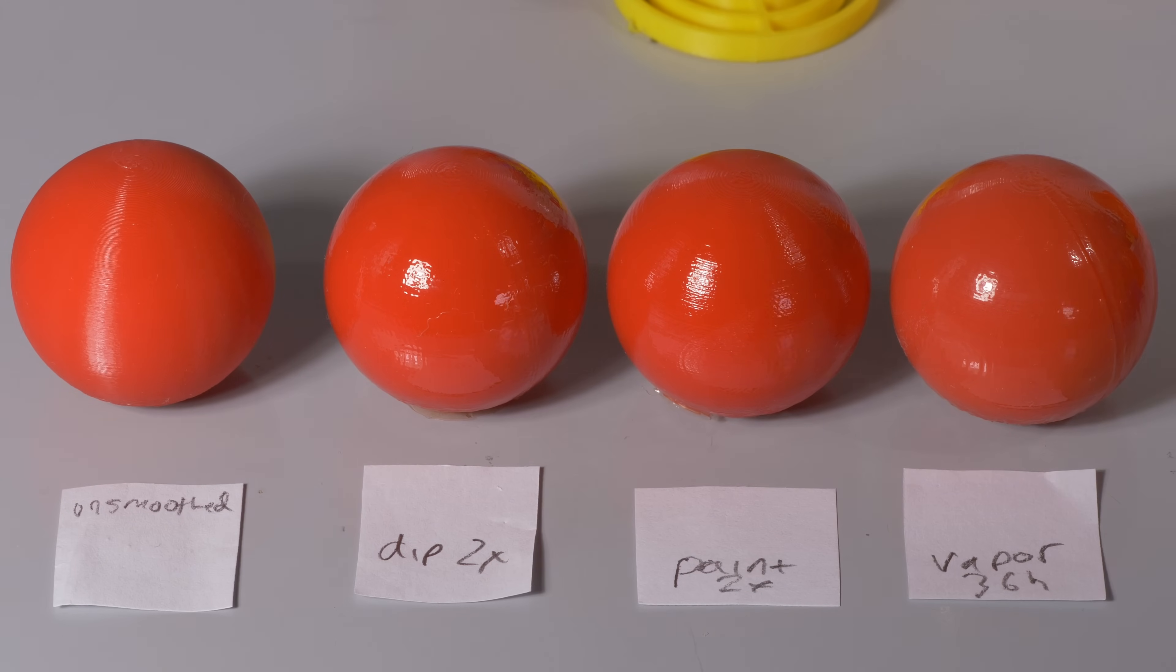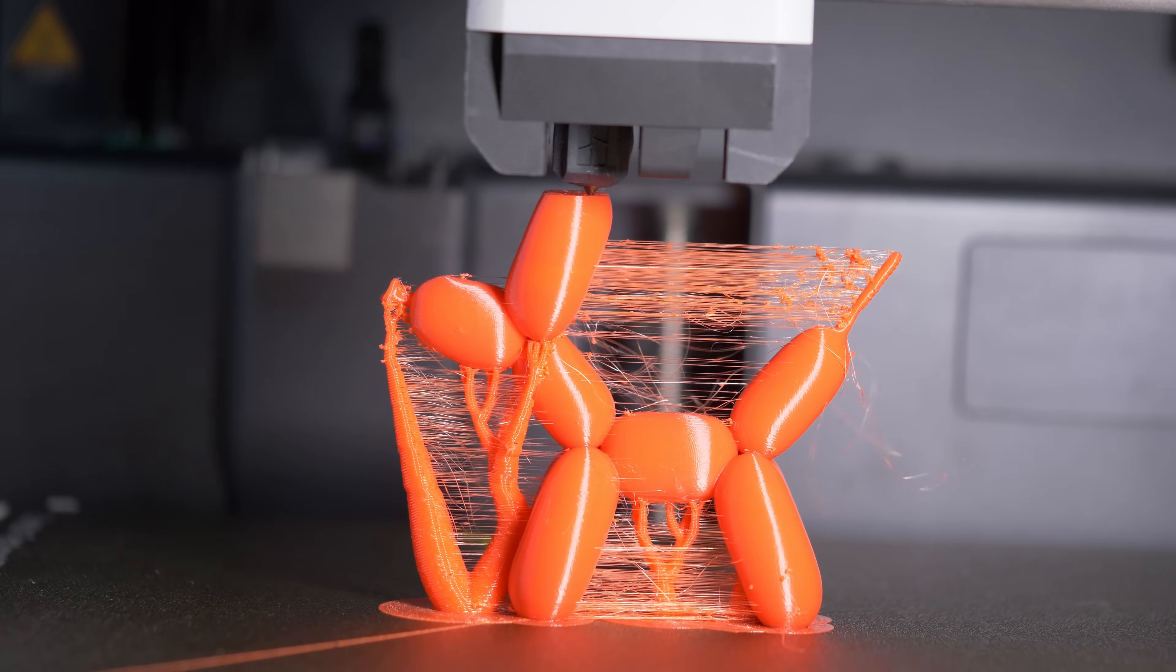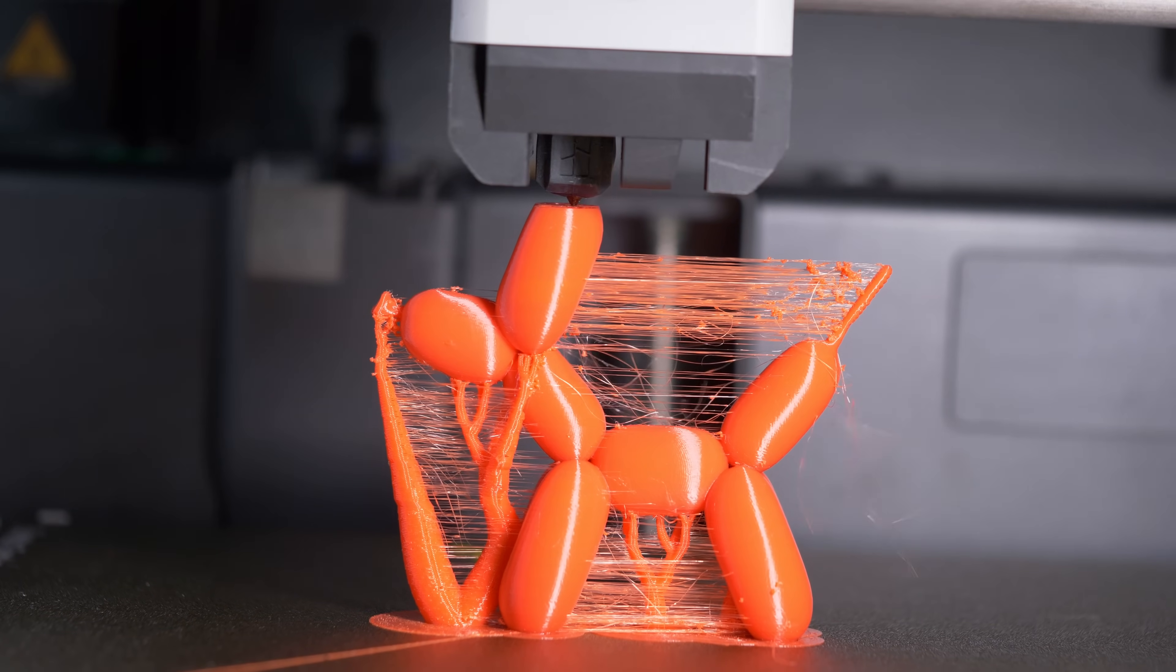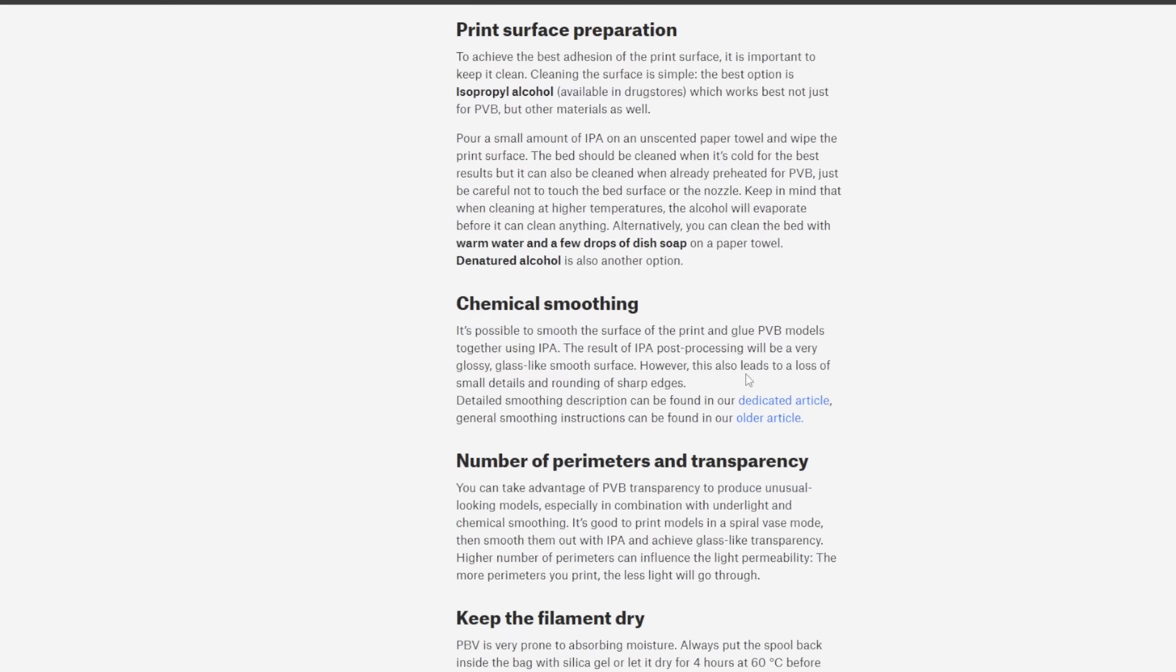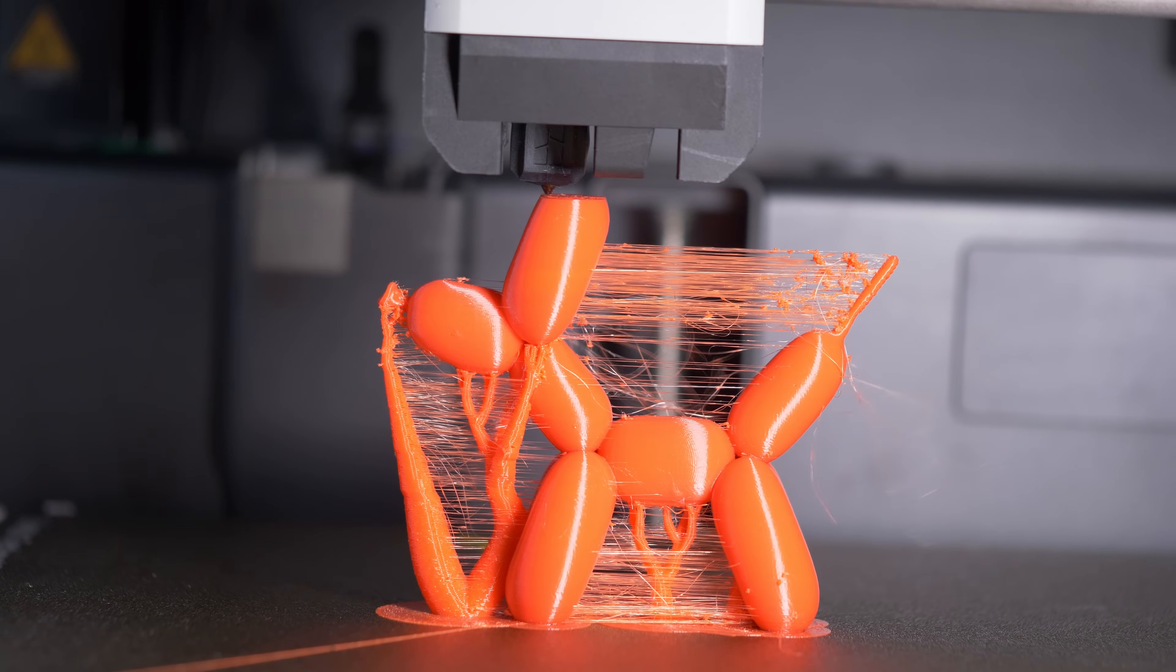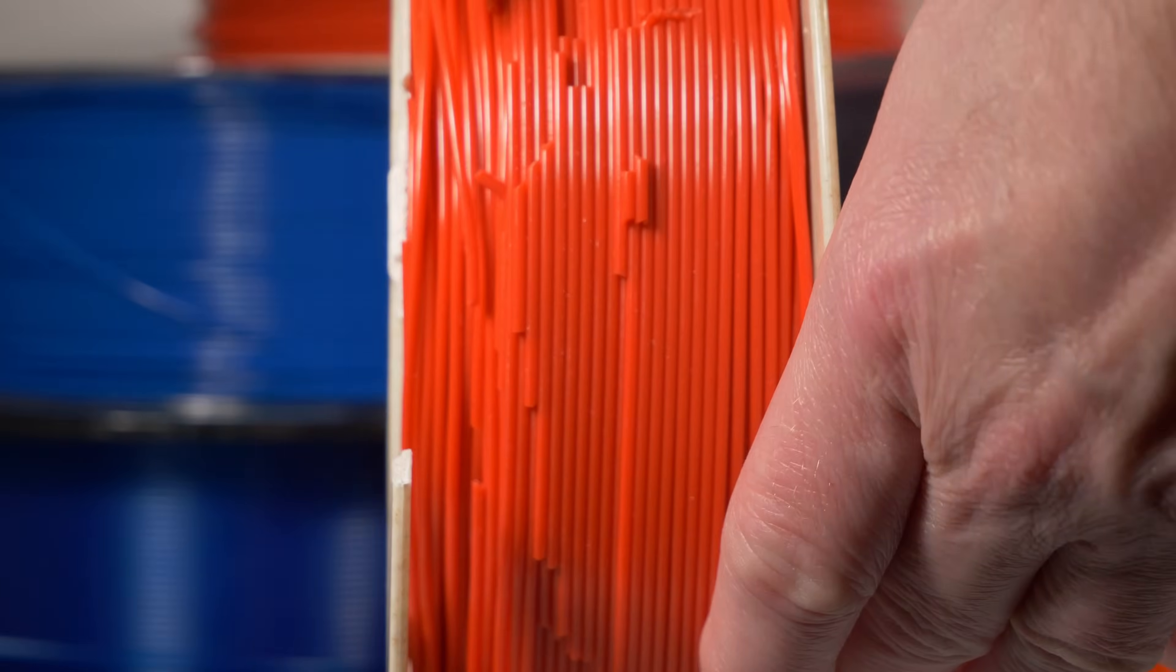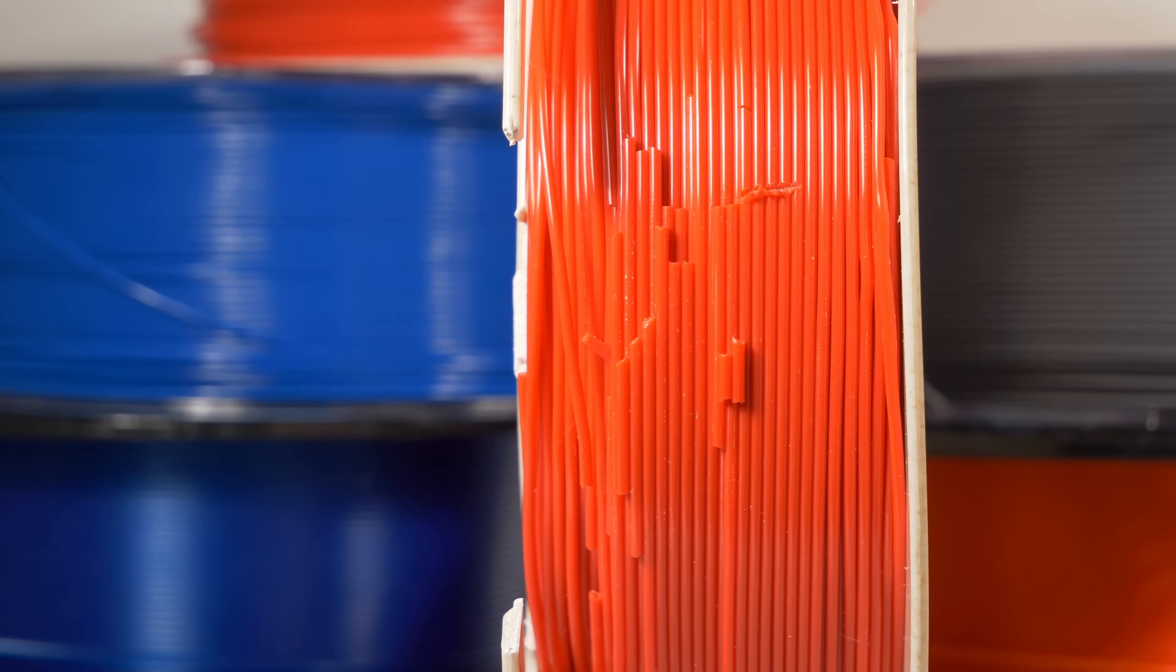One thing I noticed with PVB, especially the cheaper brands, is how much it strings. For that reason, I recommend printing Prusament PVB over all the others. A large reason why it strings is because it is very hygroscopic, probably one of the most hygroscopic materials out there. All of the non-Prusa reels were popping and steaming when I got them and I had to dry them. You need to dry your filament at about 45 degrees and not for too long. If you do what's advised and dry at 60 degrees C, you get a ruined reel. I dried it at 45 degrees for about four hours and it was fine.